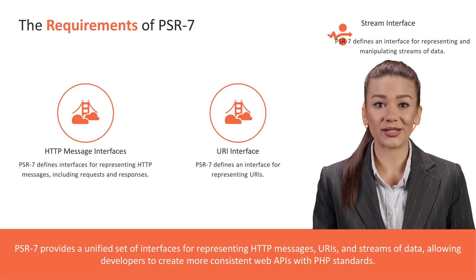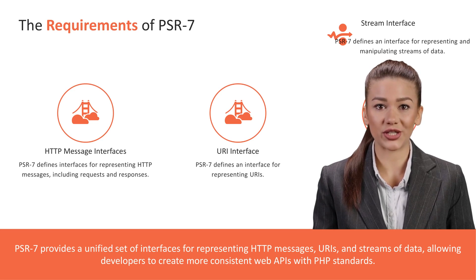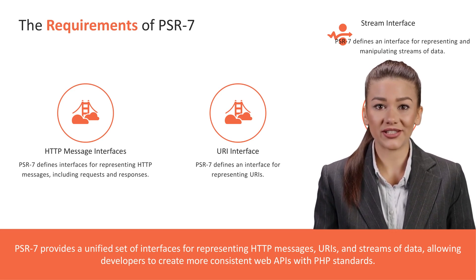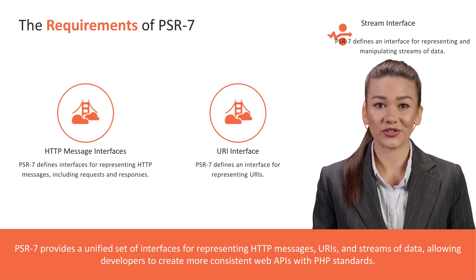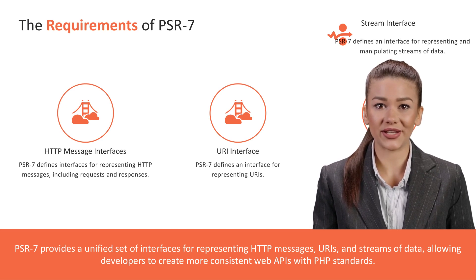Let's take a quick look at the key features of PSR7. Immutable Message Instances: PSR7 messages are immutable, ensuring data integrity and promoting functional programming practices. HTTP Methods: PSR7 defines constants for common HTTP methods, making it easier to work with different request types. Headers and Body: PSR7 provides methods for working with headers and message bodies, simplifying data manipulation.